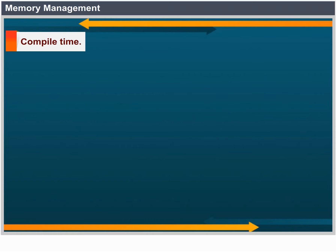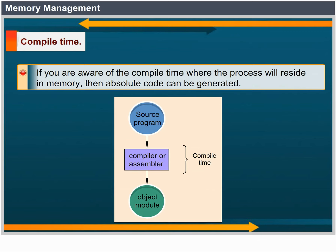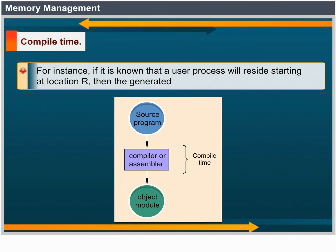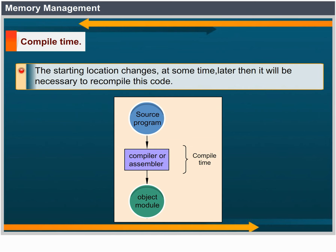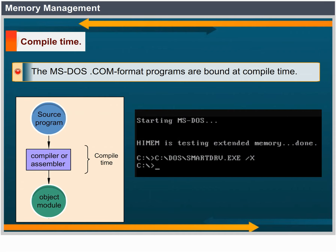Classically, the binding of instructions and data to memory addresses can be done at any step along the way. Compile time: if you know at compile time where the process will reside in memory, then absolute code can be generated. For example, if you know that a user process will reside starting at location R, then the generated compiler code will start at that location. If at some later time the starting location changes, it will be necessary to recompile this code. The MS-DOS .com format programs are bound at compile time.